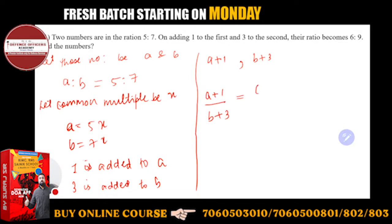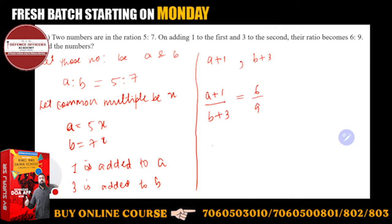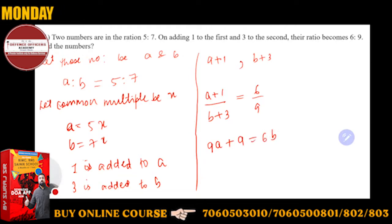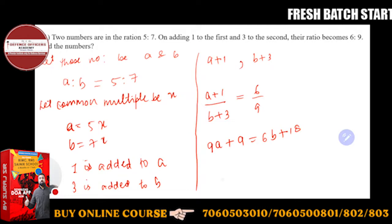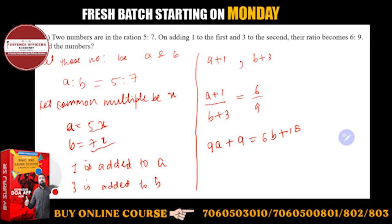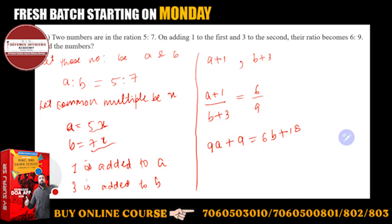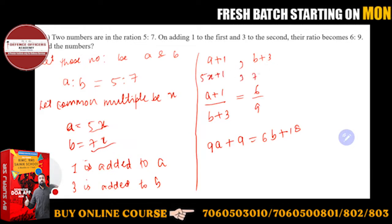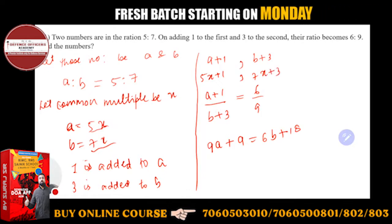So the ratio a plus 1 upon b plus 3, which is 6 upon 9. Cross multiplication, so this is going to give you 9a plus 9 is equal to 6b plus 18. Now, a is 5x and b is 7x, so one is added to a, you can directly write it as 5x plus 1. And b plus 3 can be directly written as 7x plus 3.